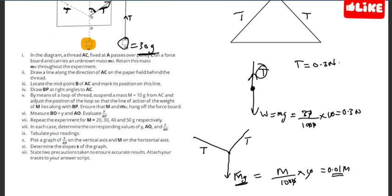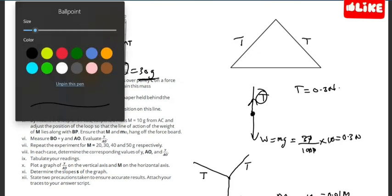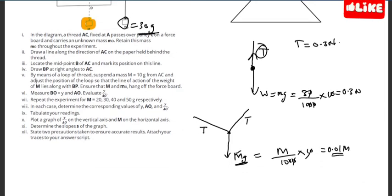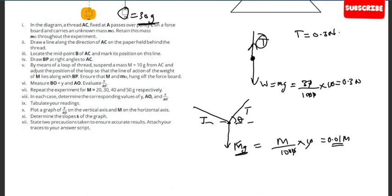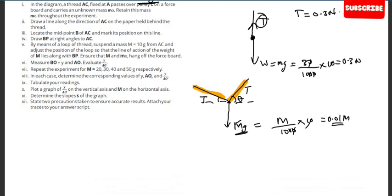Coming back to this point, this angle here would be equal to this angle here, so I'll draw the horizontal this way. This angle is theta and this one here is also theta. I'm going to resolve these two forces vertically. Since they are equal and the resultant forces are resolved vertically, the tension on the string vertically would be 2T sinθ equals the weight mg, which is 0.01m.